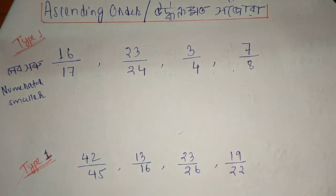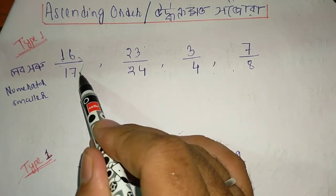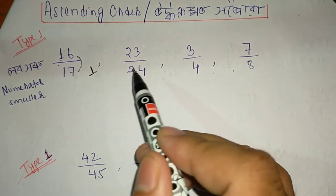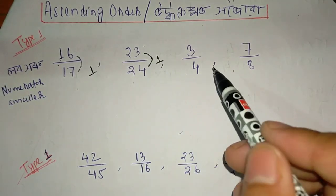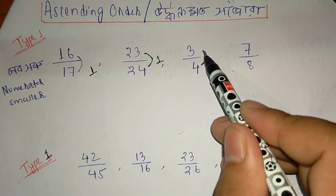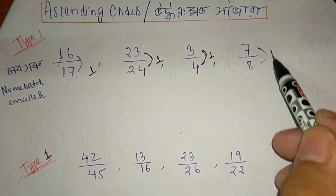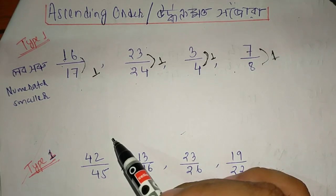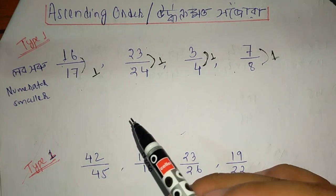As we're going to explain, we have to use the difference. The difference is 1, difference is 1, and difference is 1. This difference is 2, 2, 2, and 2.